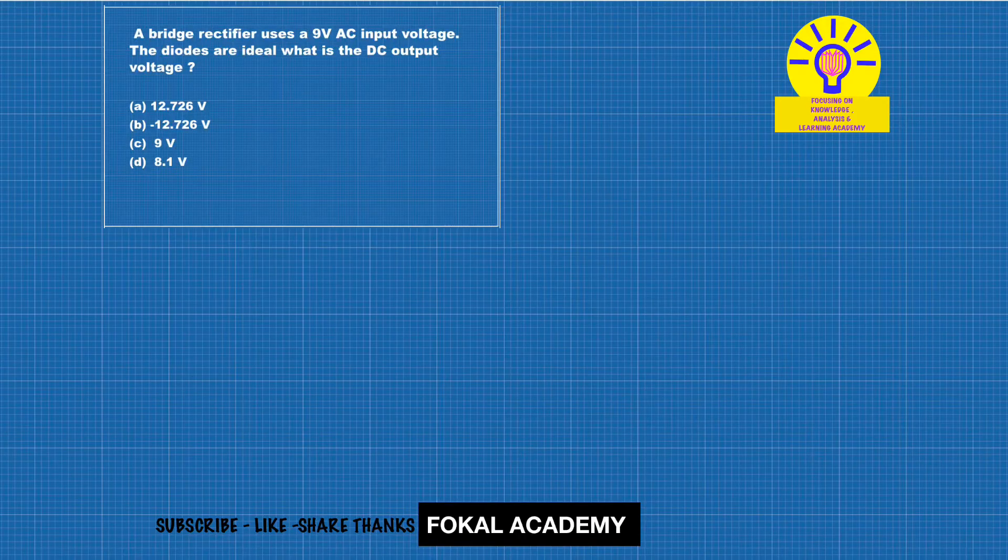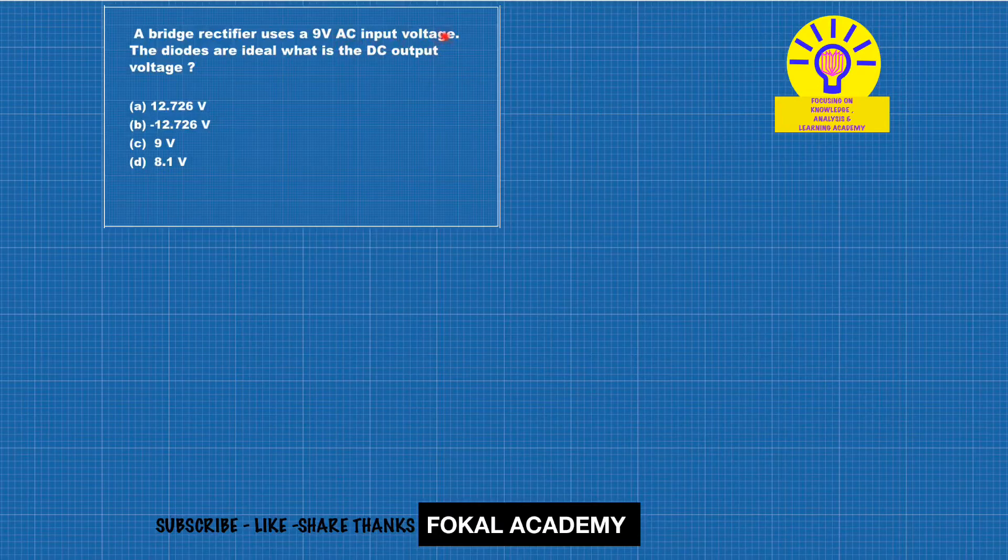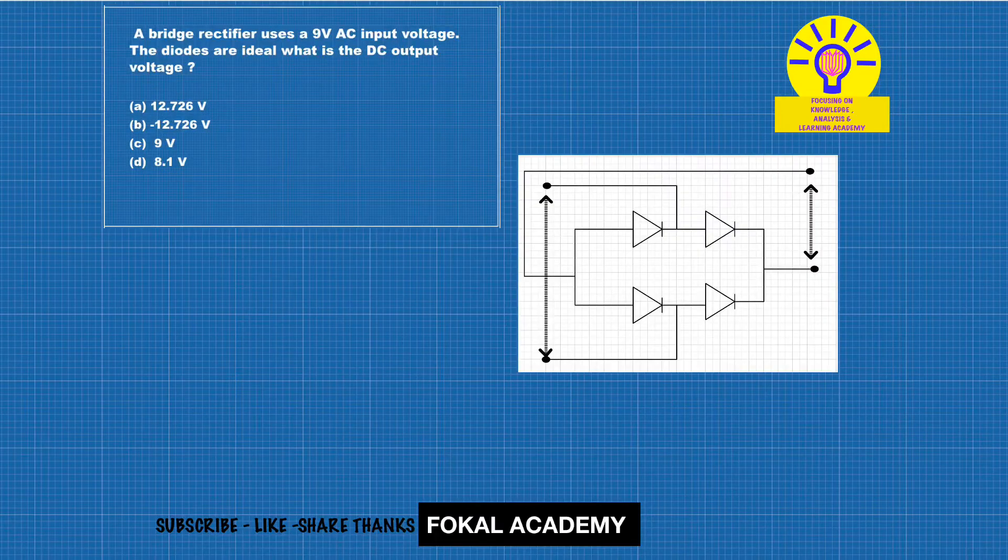Here a bridge rectifier uses a 9 volts AC input voltage. The diodes are ideal. Then what is the DC output voltage? Let's see, here is the bridge rectifier circuit.